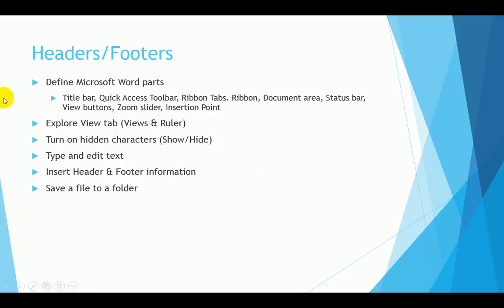The topics we're going to be discussing in this particular lesson will be defining Microsoft Word parts, and that will include the title bar, the quick access toolbar, ribbon tabs, the ribbon itself, the document area, status bar, view buttons, the zoom slider, and the insertion point.